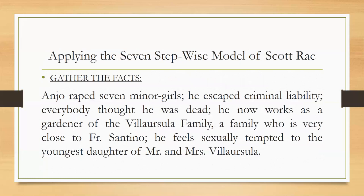Applying the seven-step-wise model, step one is to gather the facts. The facts are: Anjo raped seven minor girls; he escaped criminal liability because everyone thought he was dead; he is now working as a gardener for the Villa Ursula family; the Villa Ursula family is very close to Father Santino; and Anjo feels sexually tempted toward the youngest daughter of Mr. and Mrs. Villa Ursula.